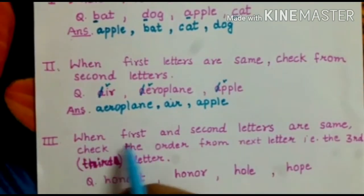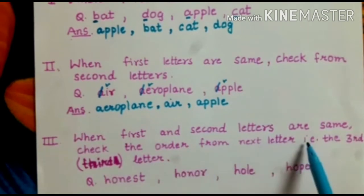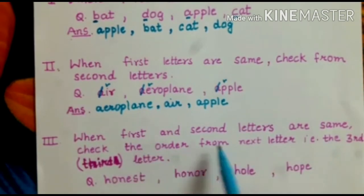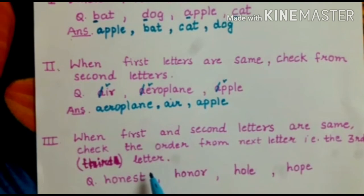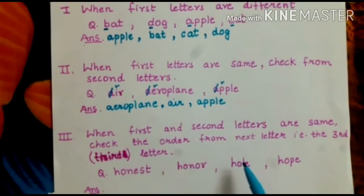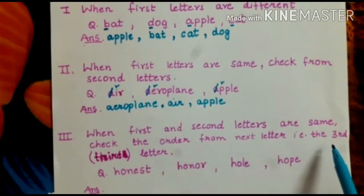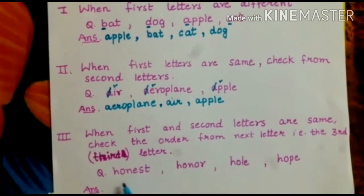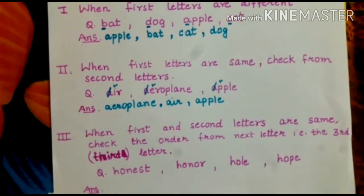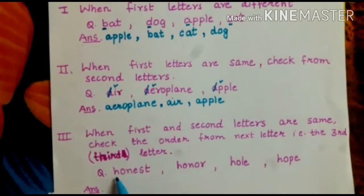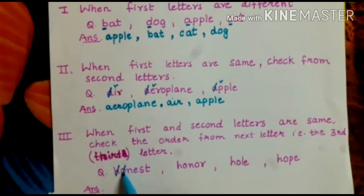Now come to the third case: when first and second letters are the same, we have to check the order from the next letter, that is the third letter. See this example — honest, honor, whole, hope. The letters which are the same in all words, H and O, we have to cancel them.